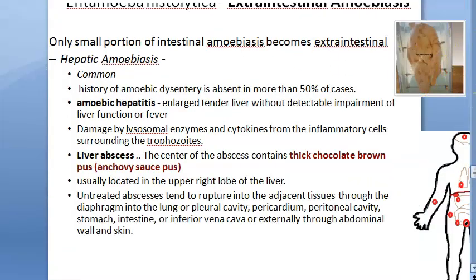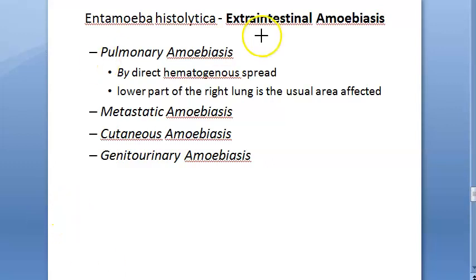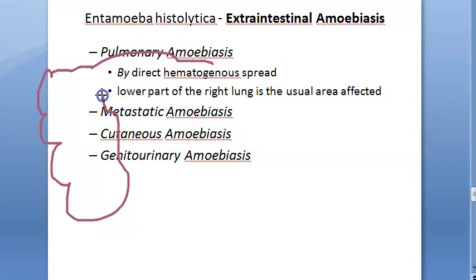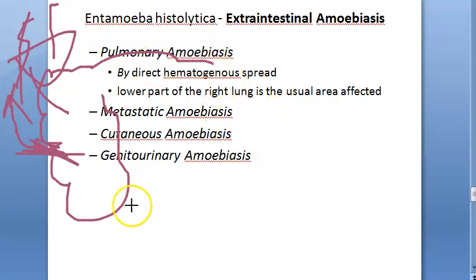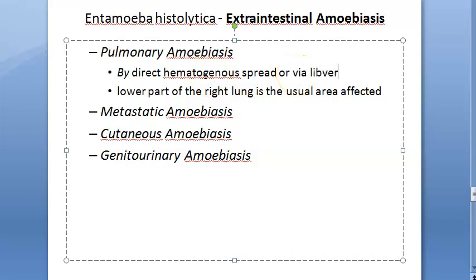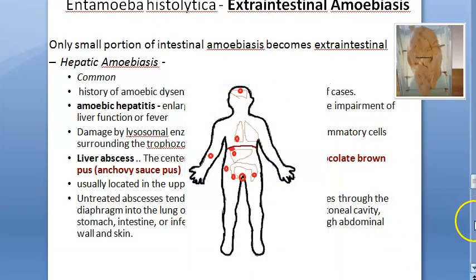In pulmonary amoebiasis, the amoeba can affect the lungs directly by entering the bloodstream. In the large intestine there is perforation causing blood vessel erosion and hemorrhage; through the blood it can reach the heart and then the lungs. So pulmonary amoebiasis can be either direct via blood, or via the liver — from the liver, blood draining to the heart may enter the lungs. The lower part of the right lung is usually affected, as shown in the diagram.